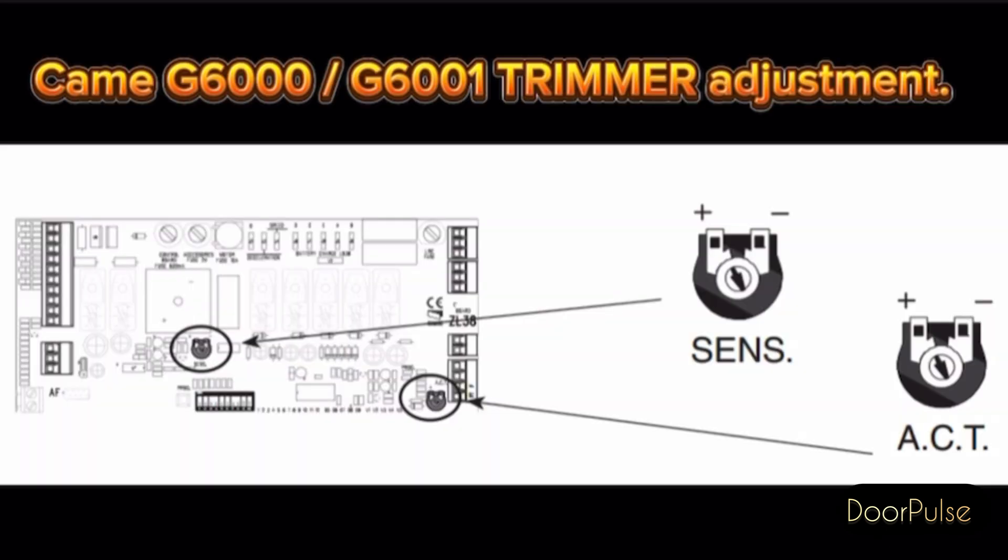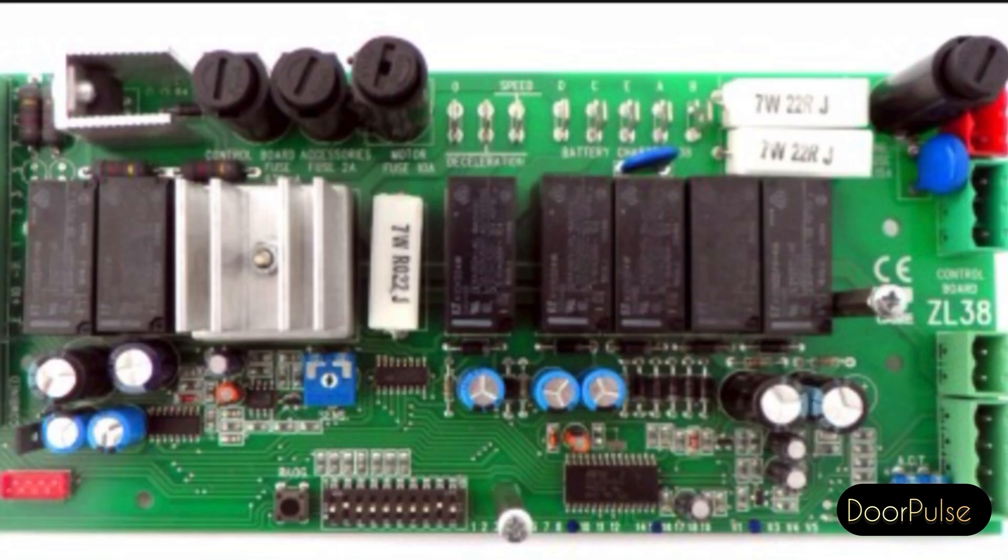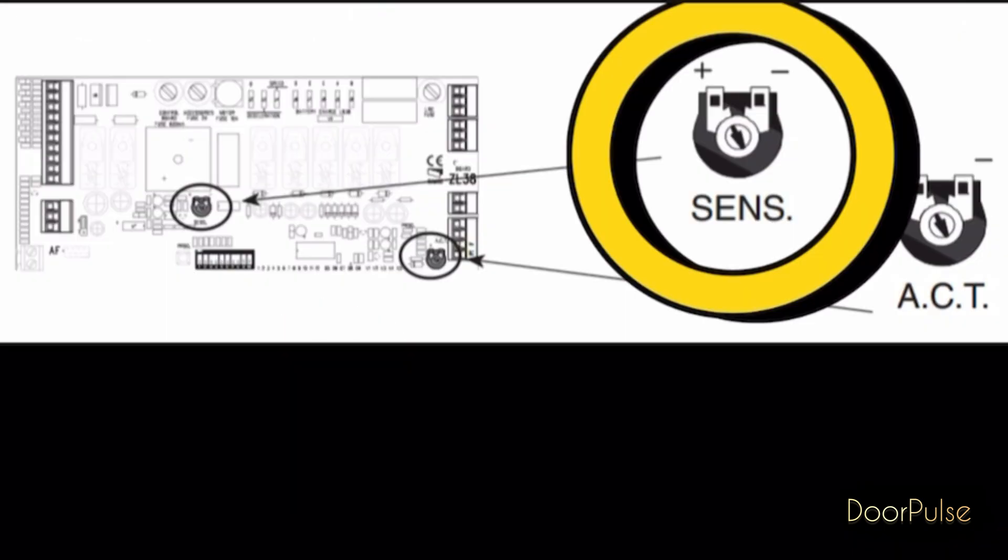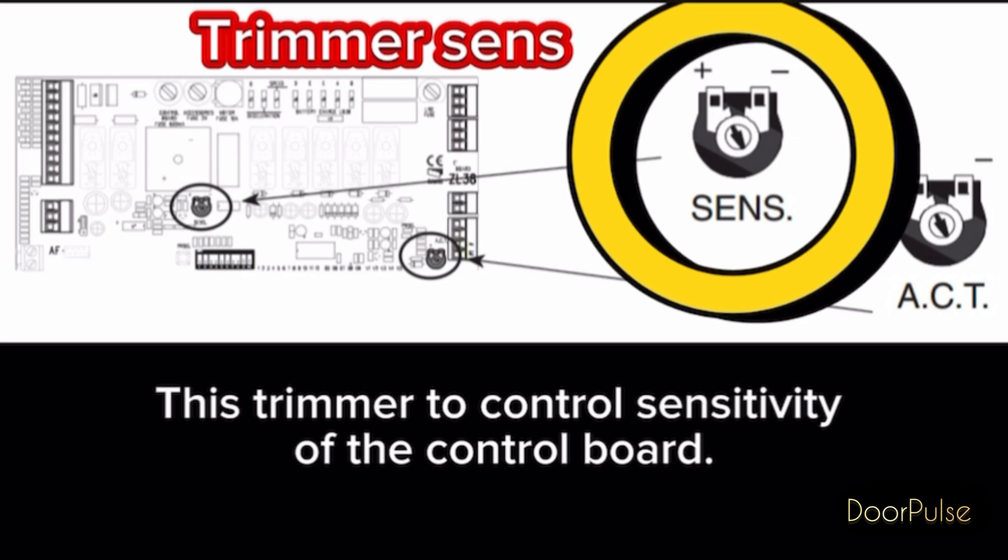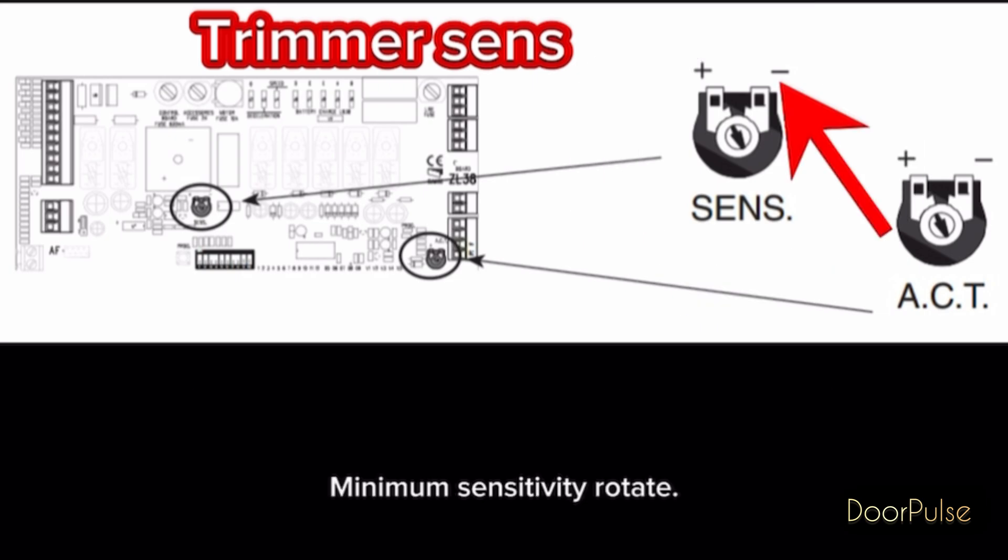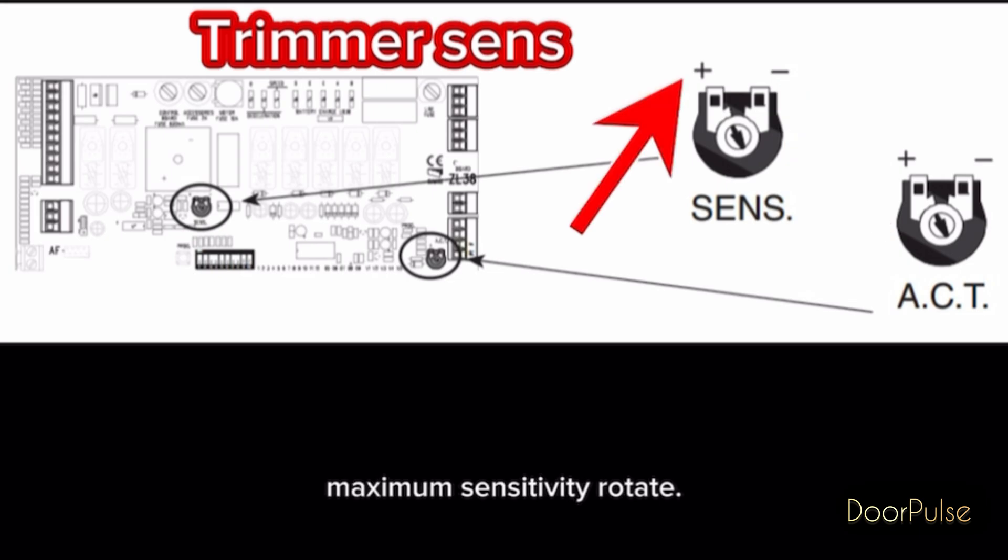KAME G6000, G6001 trimmer adjustment. In the control board, we have two trimmers use the control some functions. Trimmer sense: this trimmer to control sensitivity of the control board. It adjusts the obstruction detection sensitivity during gate movement. Minimum sensitivity rotate, maximum sensitivity rotate.